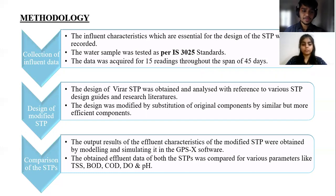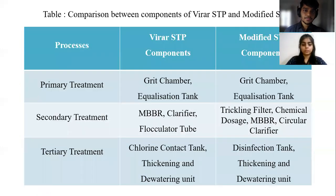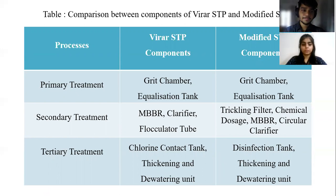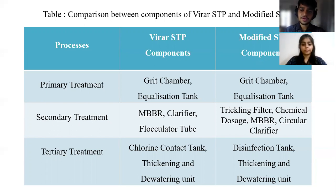The water quality parameters tested were TSS, BOD, COD, DO, and pH. As you can see, this is the comparison between the components of the Virar STP and the modified STP which was designed by us. The primary treatment was kept as is and the secondary treatment was improved by addition of a trickling filter, a chemical dosage unit, a better MBBR, and a circular clarifier tank.